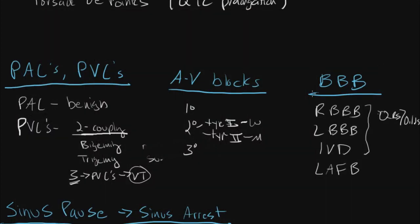Okay, we've reviewed PACs, PVCs, AV blocks, and bundle branch blocks — and those are usually things you'll normally see with a sinus arrhythmia.